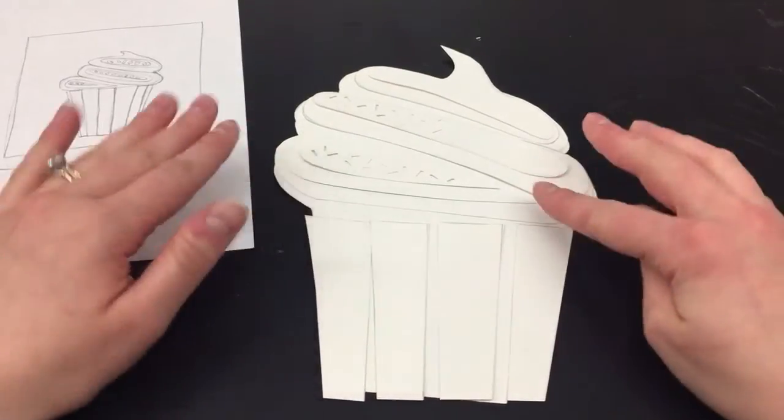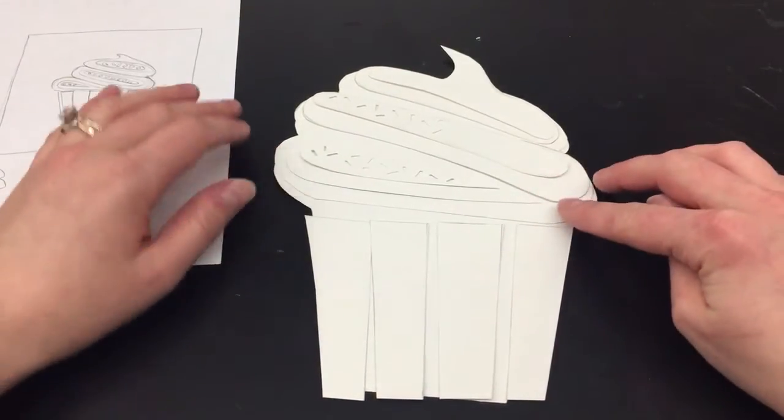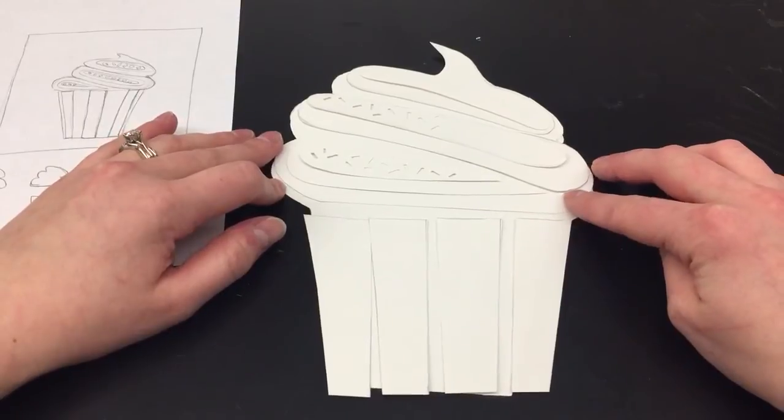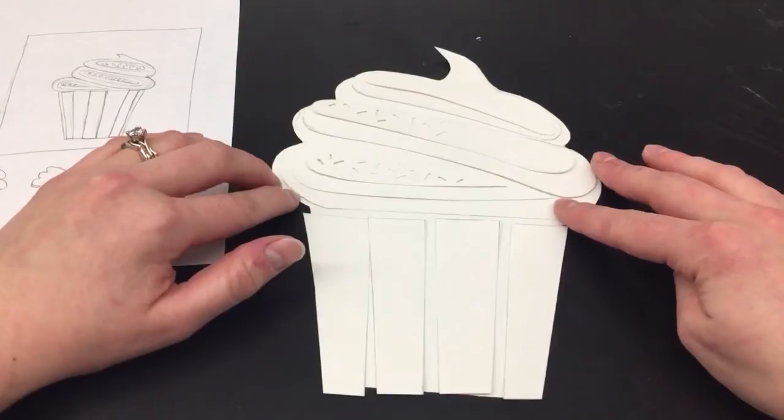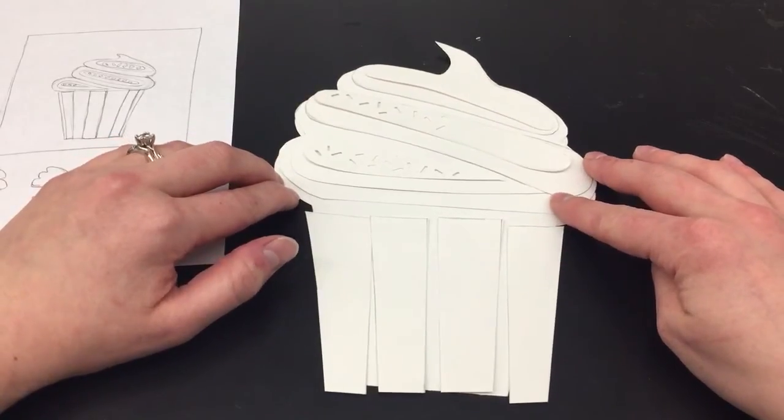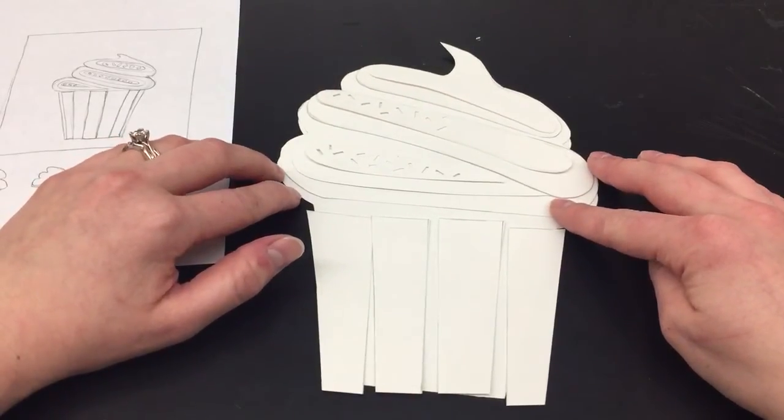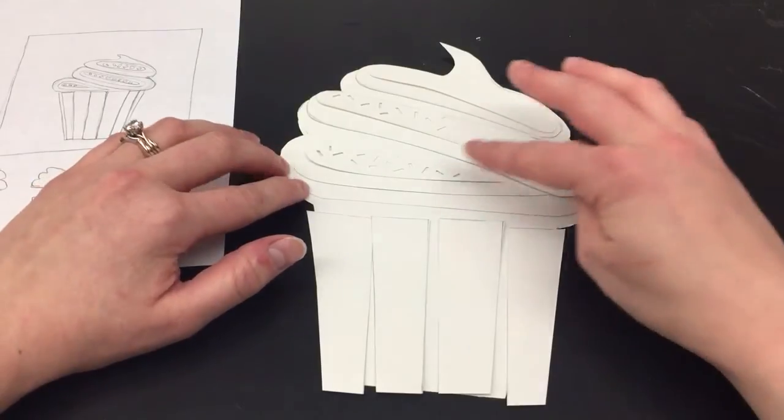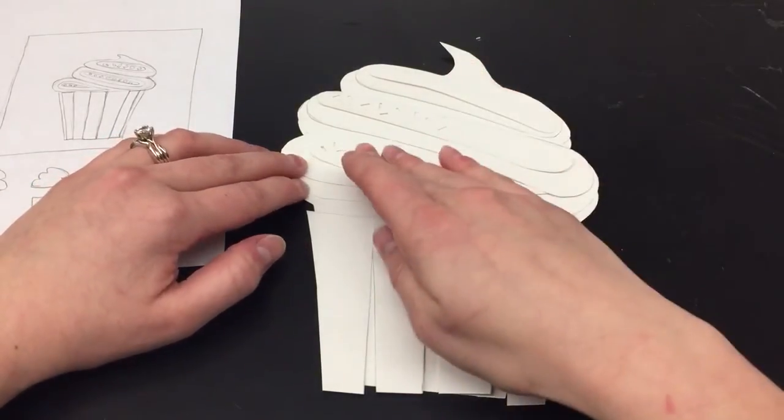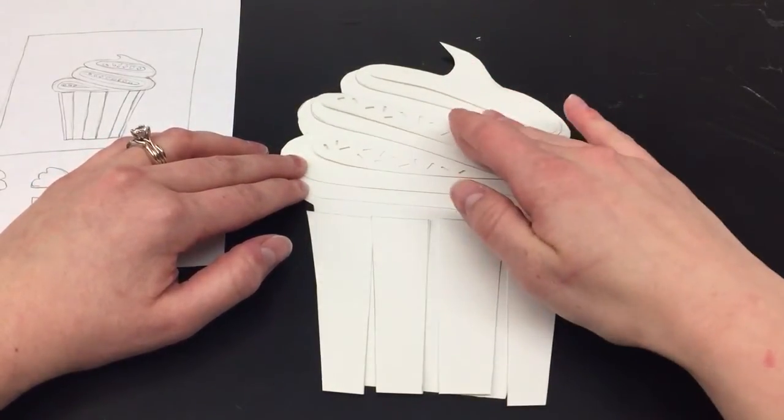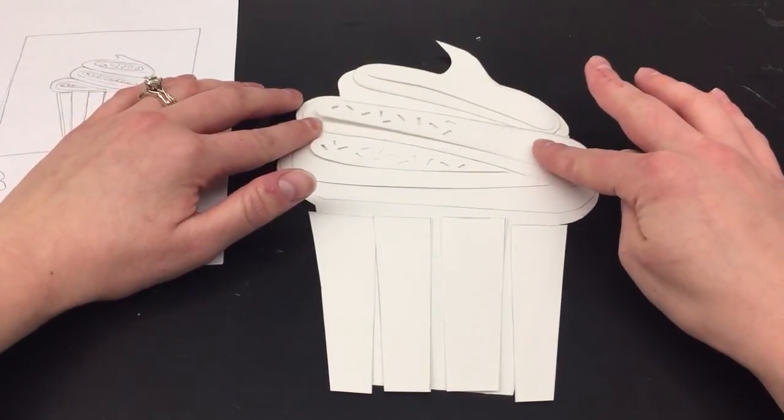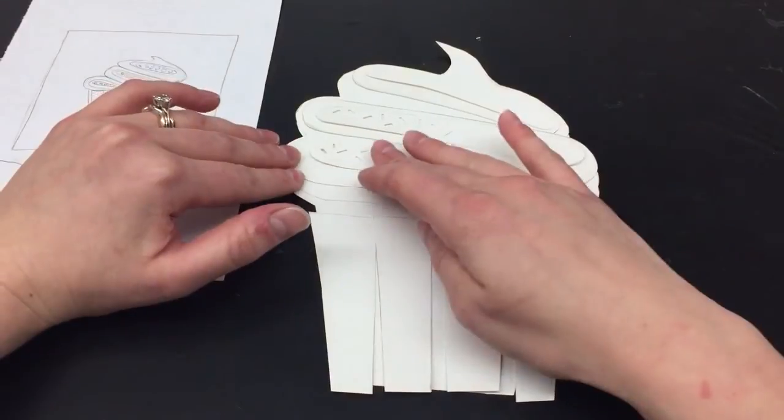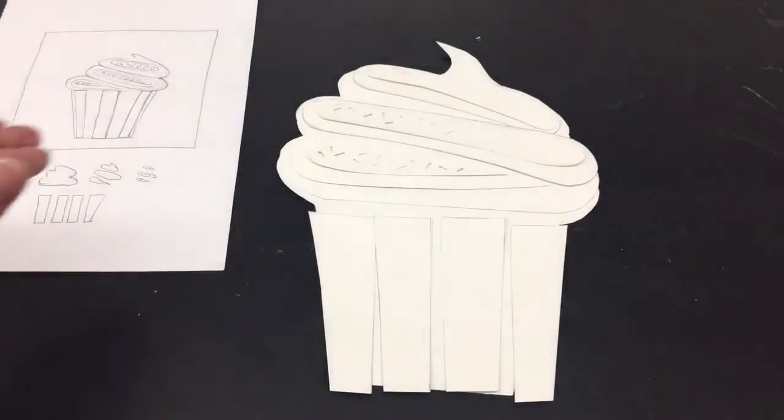And the nice thing about not having glued anything down yet is that I can still play around with where I want my layers to go. So instead of my layers being exactly on top of each other, I want them to come up a little bit on that first layer. And same thing with some of the other layers to offset them just a little bit because sometimes the frosting isn't quite symmetrical and it comes up a little bit.